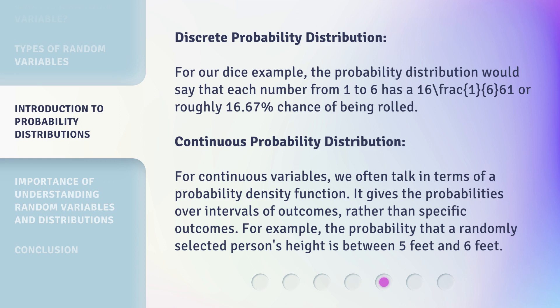For continuous probability distribution, we often talk in terms of a probability density function. It gives the probabilities over intervals of outcomes, rather than specific outcomes. For example, the probability that a randomly selected person's height is between 5 feet and 6 feet.